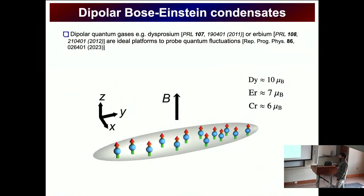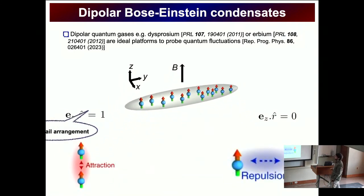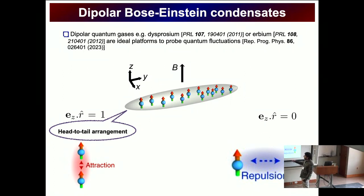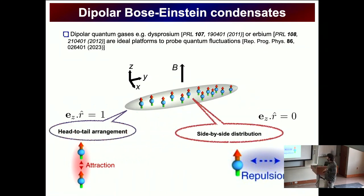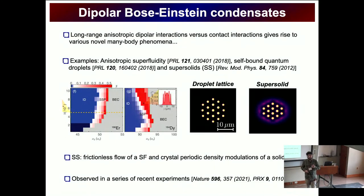Dipolar quantum gases consist commonly in the experiment of dysprosium, erbium, or very recently europium atoms. These atoms have very large magnetic moments, and for an elongated gas under the impact of an external magnetic field they can be aligned. We can distinguish roughly two different situations: if the dipoles are aligned parallel to the external field, this leads to a head-to-tail arrangement and the dipoles attract each other; in the opposite case, aligned perpendicular, they arrange side by side and the dipoles are repulsive.